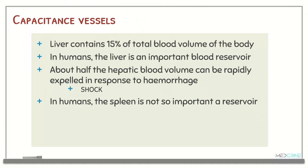What are the capacitance vessels? The liver normally contains 15% of the total blood volume in the whole body. In humans, the liver is an important blood reservoir compared to the spleen, which does not have that same reservoir importance. About half of the liver's blood volume can be rapidly expelled in response to hemorrhage, such as in hemorrhagic shock.